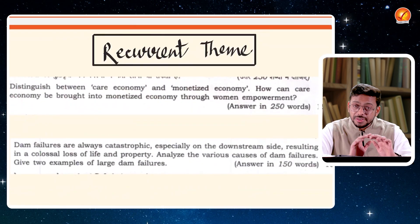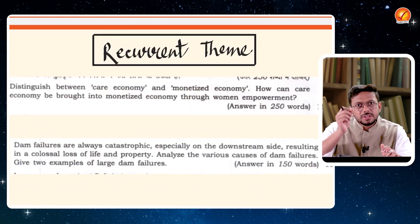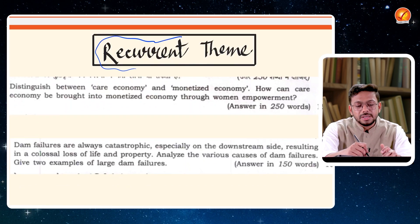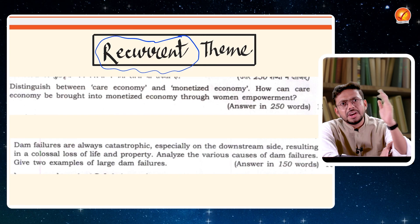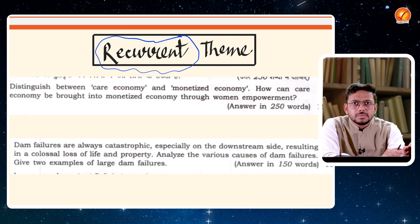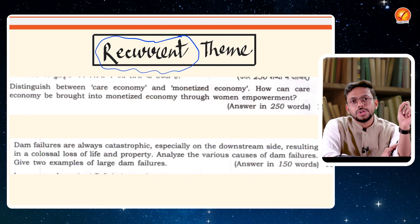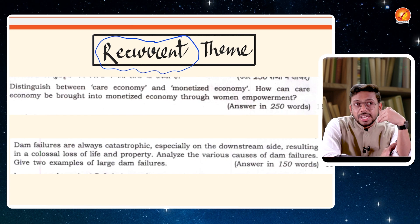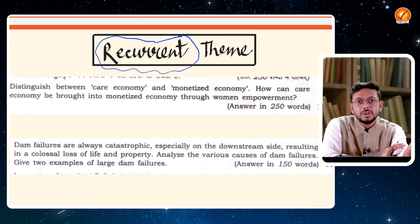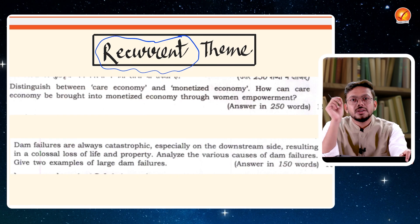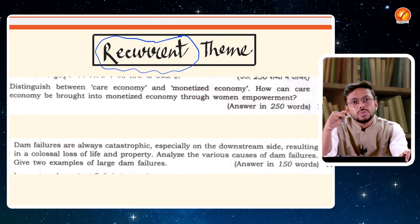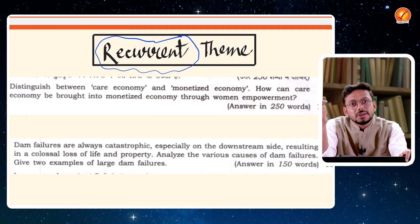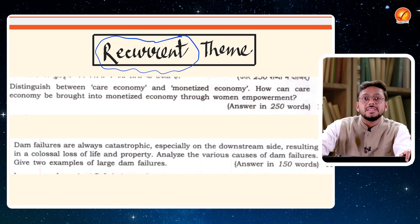This is a very important theme: whatever you see as a recurrent theme in the newspaper — for example, AI appears throughout — you can definitely expect a question on AI. Which dimension will be asked — whether AI's impact on health, education, or overall impact — is something you judge. That is the skill you develop after analyzing PYQs and newspapers.